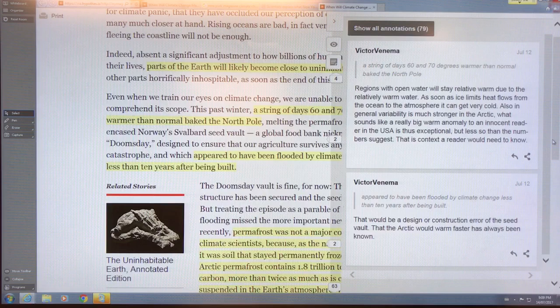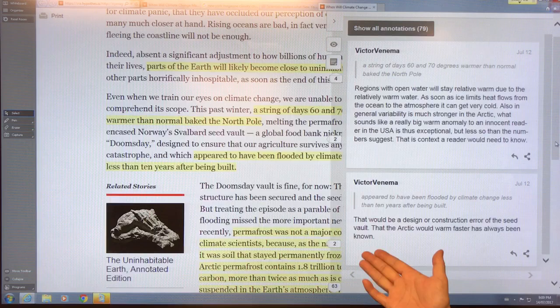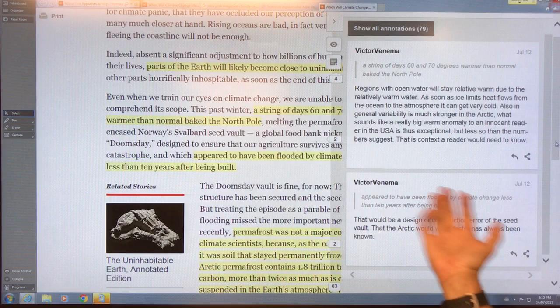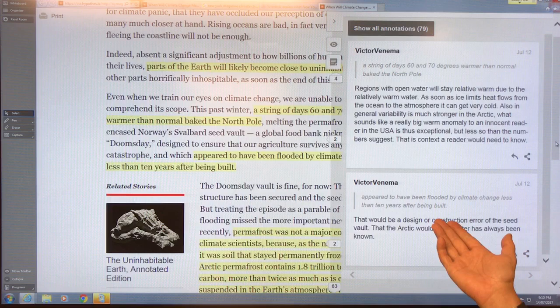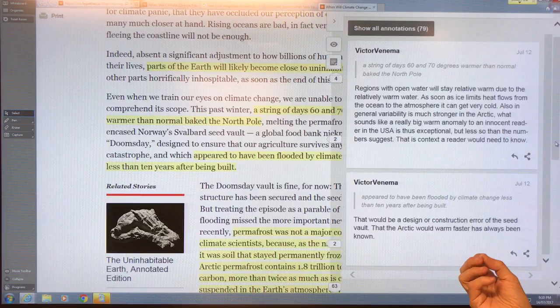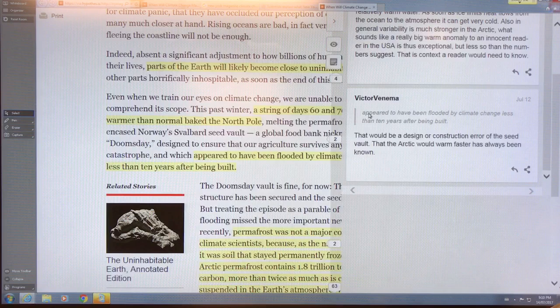These are really non-consequential comments in terms of what the gist of the paper is about. The doomsday vault leaked - it's built on permafrost, they thought it would stay frozen, they have chillers on the permafrost. It rained a lot up there and water went in, 10 years after it was built. Design error, construction error. The statement that the Arctic would warm faster has always been known - yes, computer models show this, but how fast the Arctic is warming is much faster than has always been known. So this statement is incorrect and very misleading.